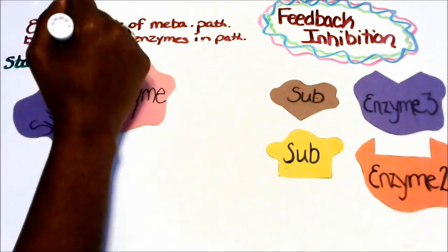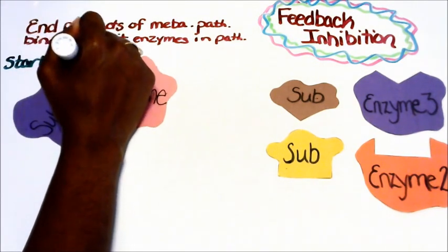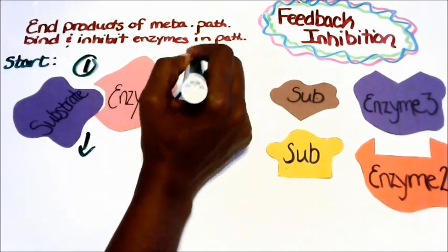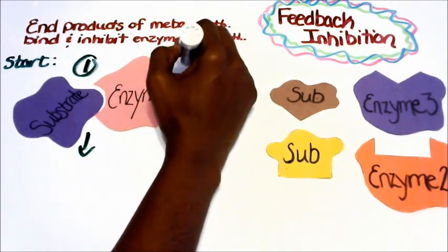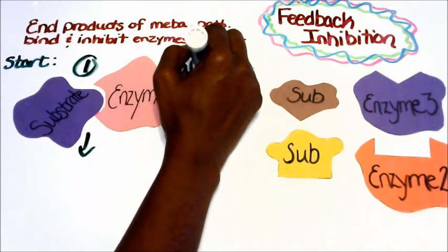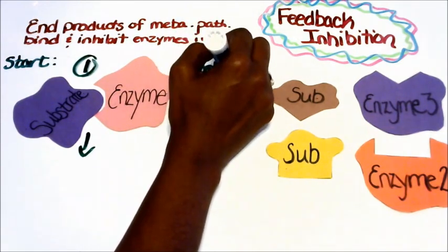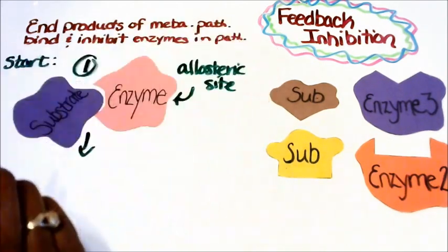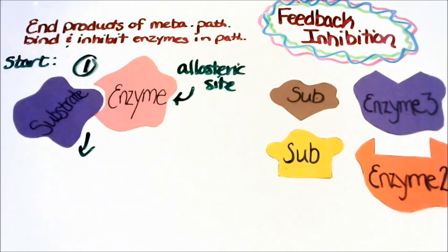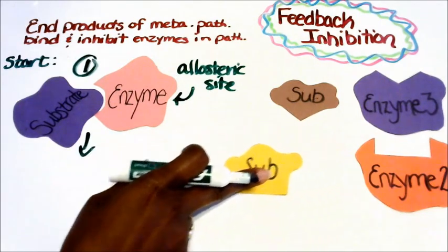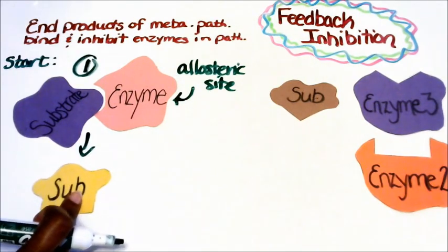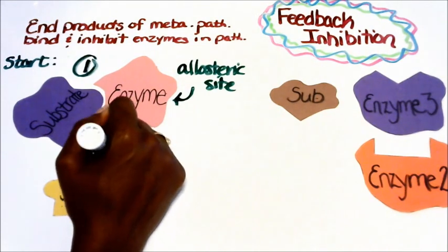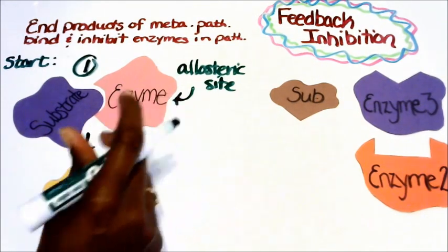So this is step number one. Here on the enzyme there is an allosteric site. The next step is that we have our intermediate A, and we're gonna put IA with a little a.